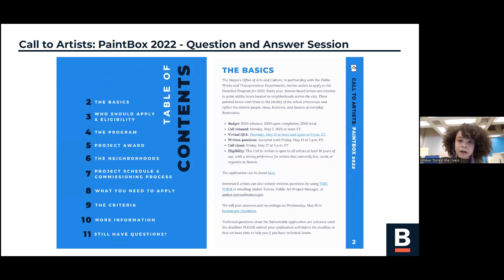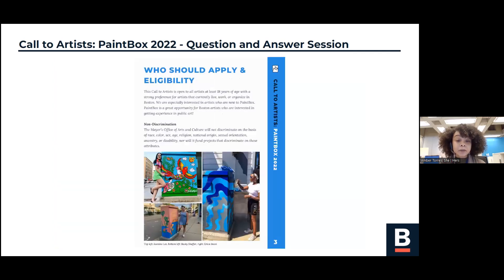The first page of the call contains basic information such as the budget, eligibility requirements, and important upcoming dates. For example, the deadline to apply, which is Friday, May 27th at 5 p.m. And my contact information at the bottom, amber.torres at boston.gov. One thing I will note is that while we will accept applications up until the deadline, we strongly encourage artists to apply before 5 p.m. to avoid overwhelming submittable. So please prepare ahead. This call is open to artists over the age of 18 that live, work, or organize in Boston. We are especially interested in artists who are new to Paintbox.